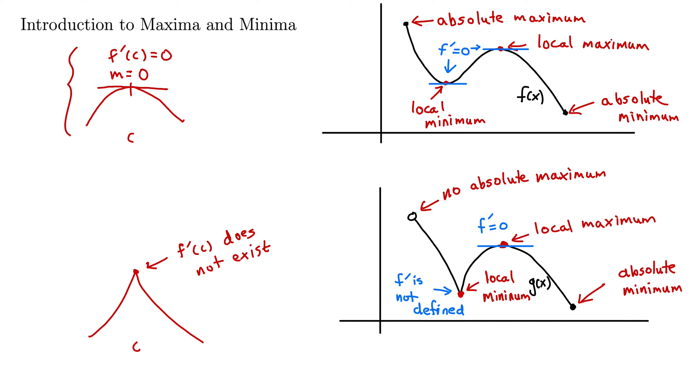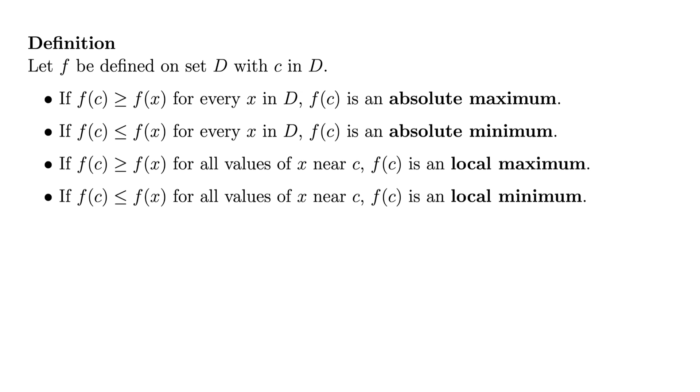Okay, well, let's tighten up some of these definitions a little bit. Okay, so definition. Let F be defined on a set D with C in D. So C is some number in that set D. Don't worry too much about this D. You can just think of this D as the domain. And if you want to use the fancy mathematical notation for this kind of situation, you would say C is an element of D. We use this kind of epsilon-looking thing.